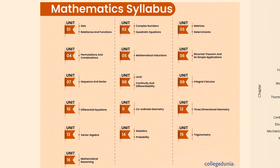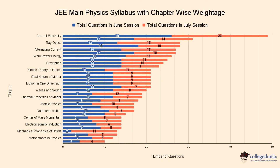Here you can see JEE Main Physics chapter-wise weightage for the year 2022. Among these chapters, Current Electricity has the highest number of questions asked in both sessions. Similarly, chapters like Ray Optics, Alternating Current, and Work Power Energy have more weightage than other Physics chapters.